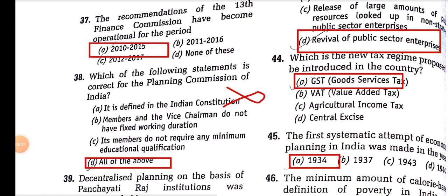Which one of the following statements is correct for the Planning Commission of India? The answer given is 'all of the above', but statement 1 is wrong because the Planning Commission or NITI Aayog is a non-constitutional or extra-constitutional body, meaning they are not mentioned in the Constitution.